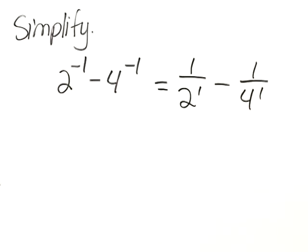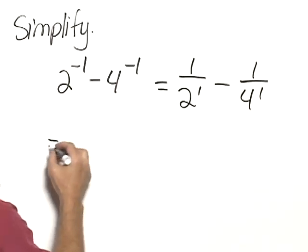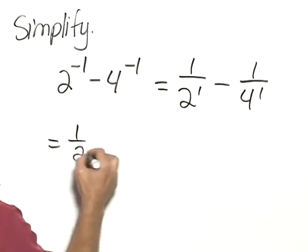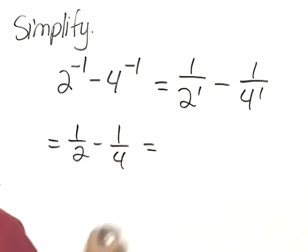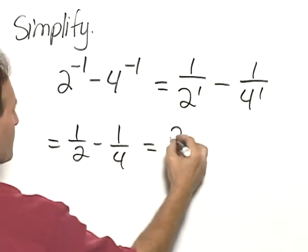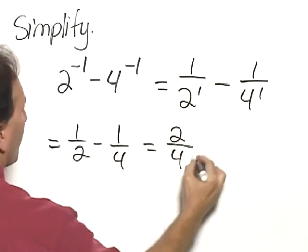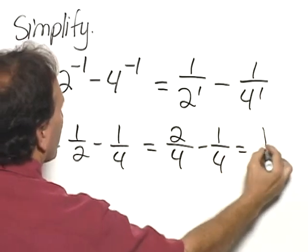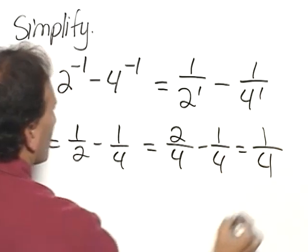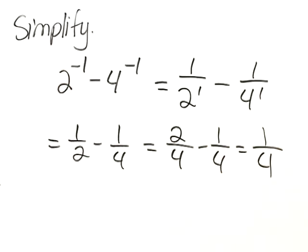So now what we have is 1 half minus 1 fourth. The common denominator is 4, so this would be 2 fourths minus 1 fourth, which is equal to 1 fourth.